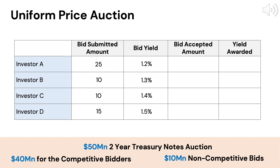Firstly, Investor A, as the most competitive bidder, gets awarded the full bid amount of $25 million. Investor B, having submitted the next most competitive yield, gets awarded the full bid amount of $10 million.